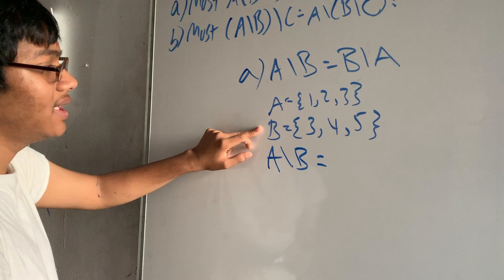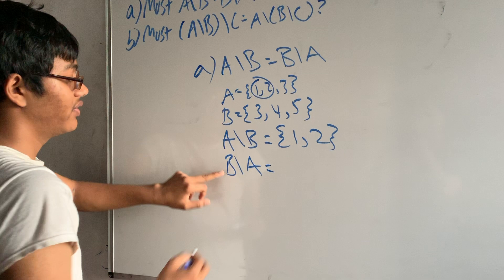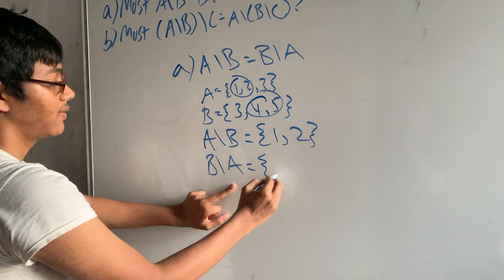So for example, the difference of set A and B here is going to be everything in A that's not in B, so that's going to be {1, 2}. And we can repeat that for the difference of set B and A. If we do the difference between sets B and A, we get {4, 5}.